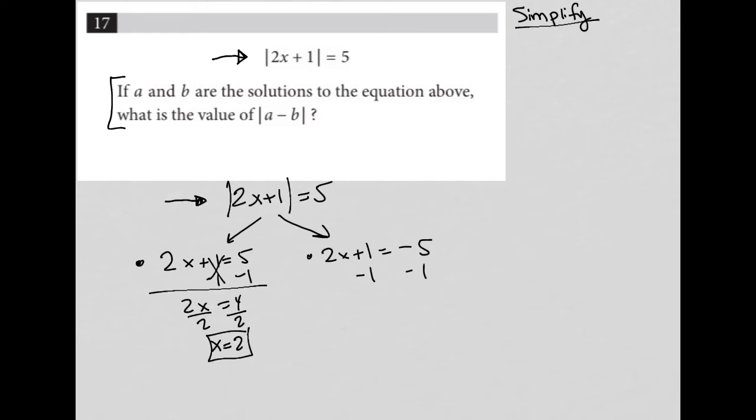And on this side, I'm getting 2x equals negative 6, divide by 2, and I get x is equal to negative 3. So let's look at the question now.